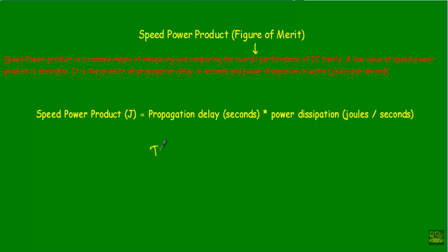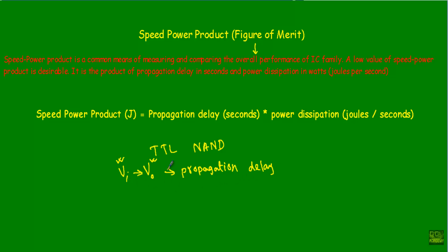Consider a TTL NAND gate. It is desirable for any logic gate to obtain the output response at the same instant we apply the logical input — that means the propagation delay should be minimum. It is also desirable that the logic gate draws the minimum amount of power from the supply. The speed power product is the product of propagation delay and power dissipation.